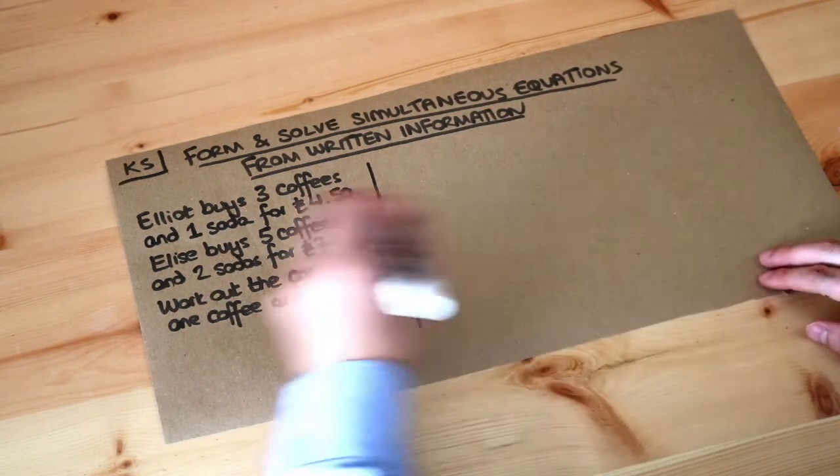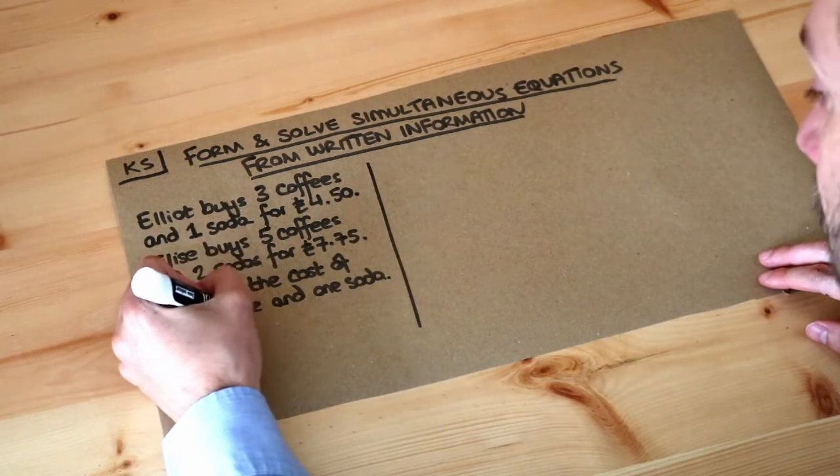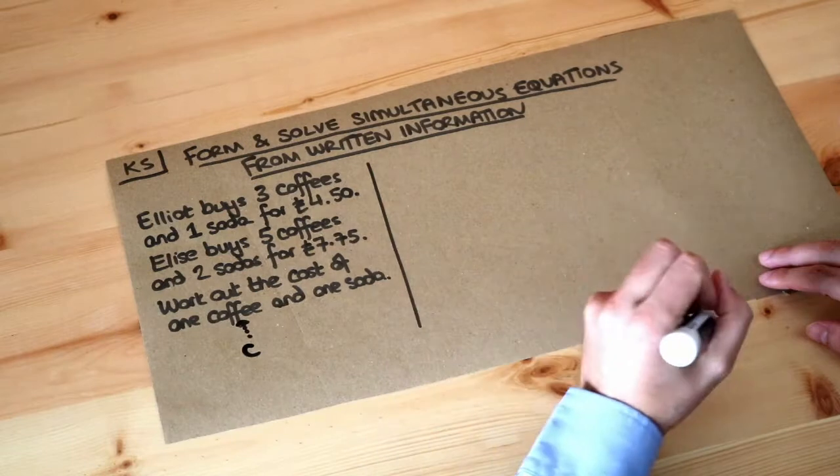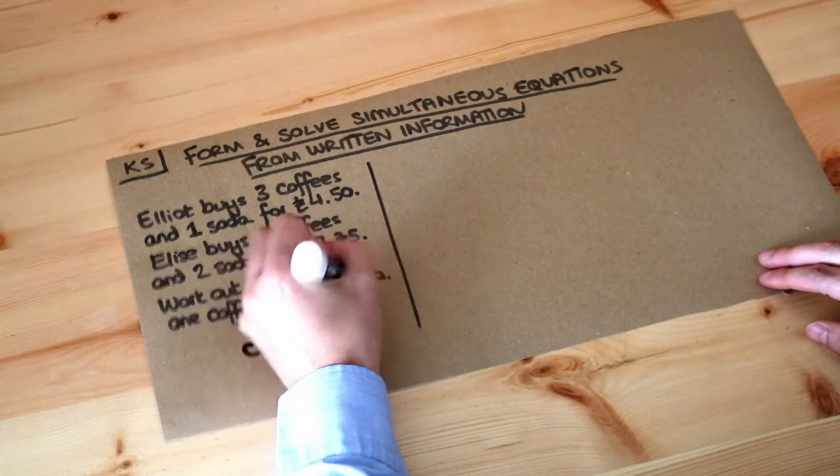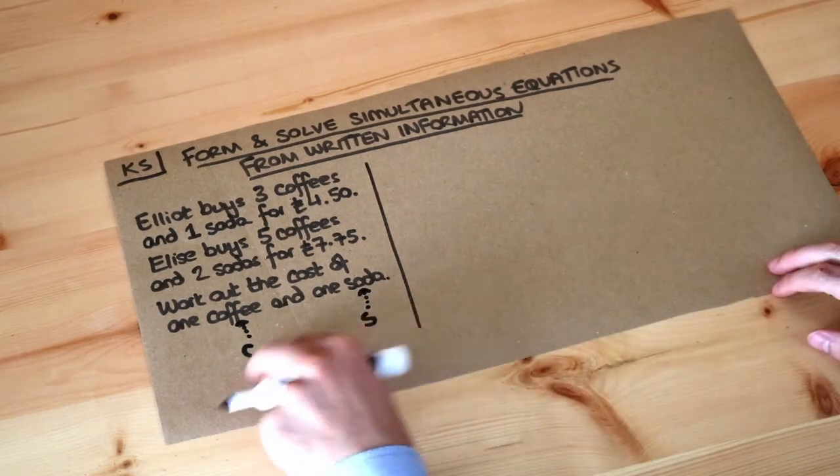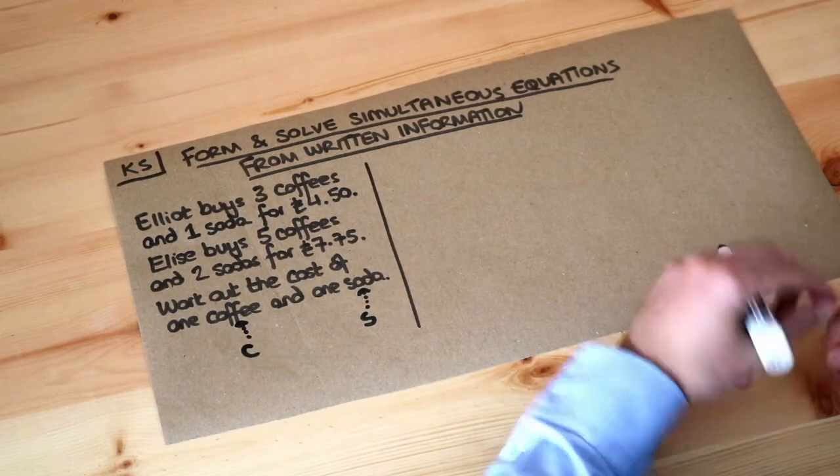Let's allocate variables to the cost of coffee and the cost of soda. We're going to say that coffee costs c pence and one soda costs s pence. Then we can use these variables to create some equations which we can solve.